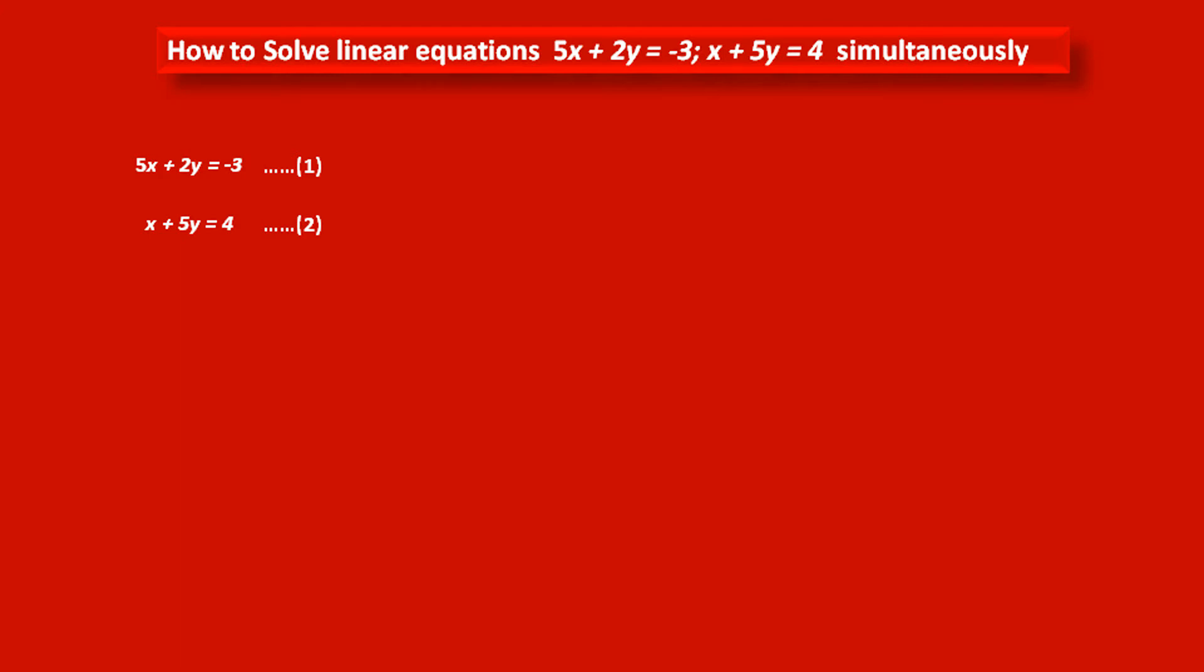So here in equation 1, coefficient of x is 5 and in equation 2, coefficient of x is 1. So it is easy to change coefficient of x in equation 2 by multiplying it by 5.